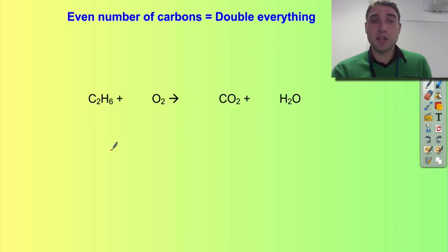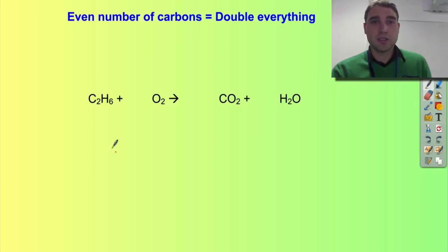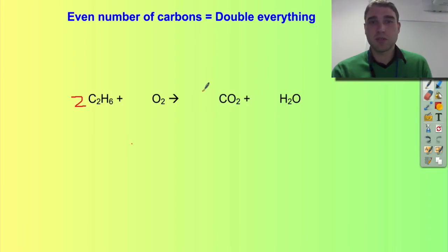Let's look at our next example — ethane. We've got two carbons this time, so this is where we're going to use our rule of doubling everything. To start with I'm going to double my amounts of ethane, which means I'm going to double consequently my amount of carbon dioxide. So I've got four carbons on this side, which means I need four carbons over here. Now I count up my number of hydrogens: I've got two times six which is twelve.